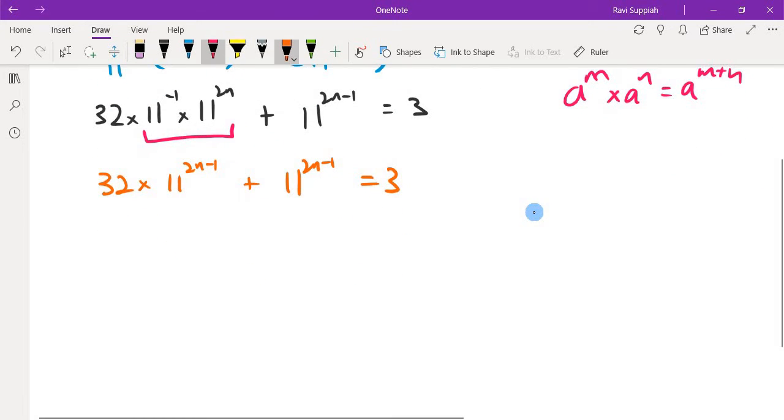This is now a normal factorization. If you can't see it, imagine representing this whole term by a. If I represent 11^(2n-1) by a, how will it look?